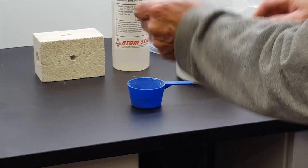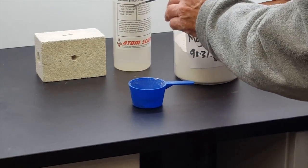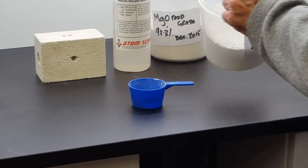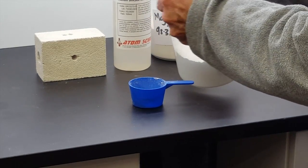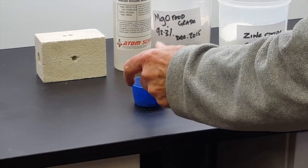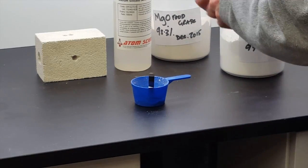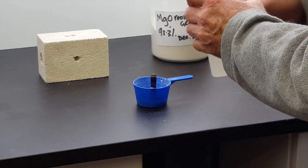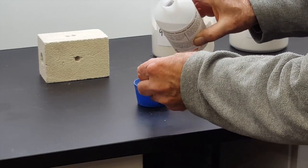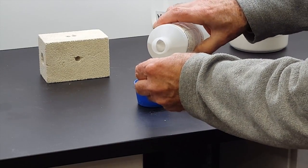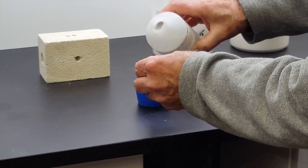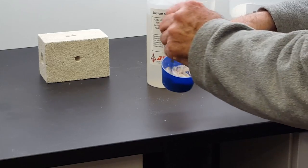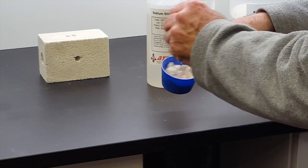It's equal quantities of magnesium oxide and zinc oxide. Now I'm going to very carefully add sodium silicate solution. This is also called water glass. The idea is to make something rather like dairy cream or maybe melted ice cream.